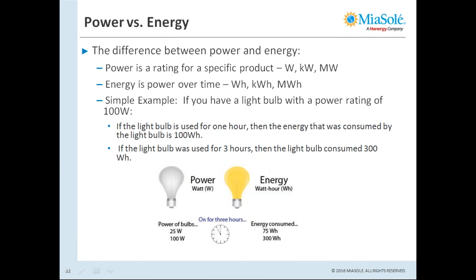Energy is power over time, with metrics like watt-hour, kilowatt-hour, megawatt-hour, and gigawatt-hour. A quick example: if you have a 100-watt rated light bulb and use it for one hour, you have consumed 100 watt-hours of energy. If you use the same 100-watt light bulb for three hours, you have consumed 300 watt-hours of energy.